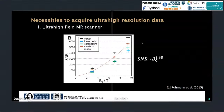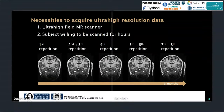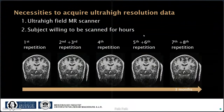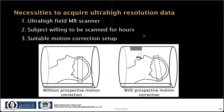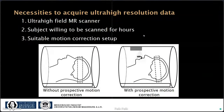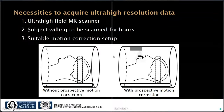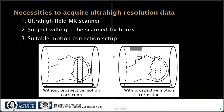For that data set we acquired a total of eight volumes and each took one hour, so you need a subject willing to be scanned for several hours. We split the acquisition across many sessions over a span of three months. Furthermore, to acquire data with that high resolution and long scan times it's absolutely necessary to have a suitable motion correction setup. In Magdeburg we use prospective motion correction, meaning that prior to each acquired excitation we update the field of view to compensate for rigid motion during the scan.